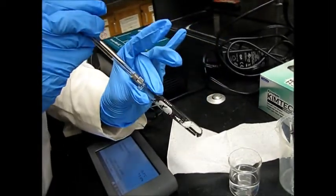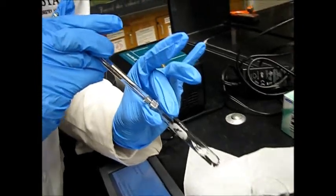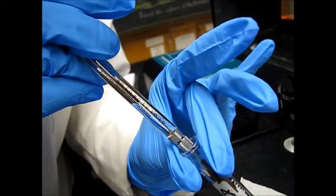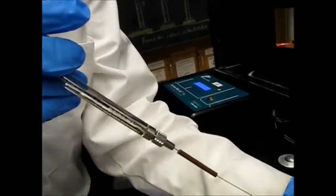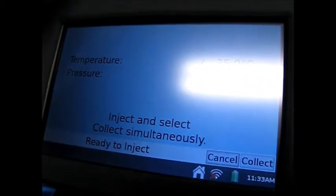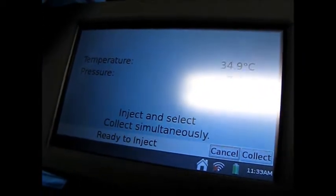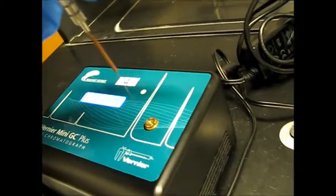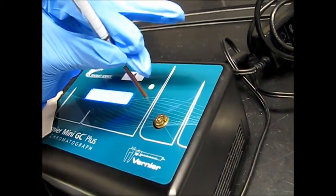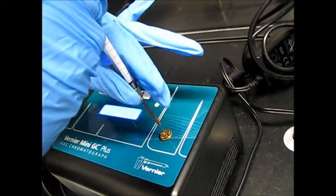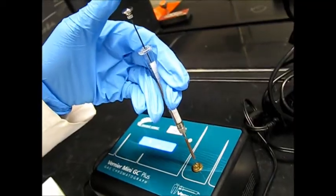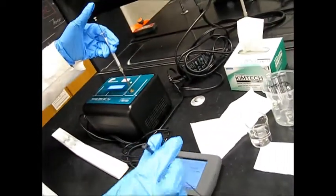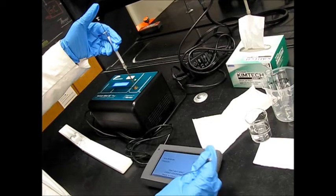Okay, so now I'm going to actually get my sample. I got 0.4. And now we can also see that the GC is ready. Okay, inject and select simultaneously. So GC is ready. Therefore, I'm going to insert my needle. And green light is also there. Slowly insert. And now our needle must be straight.